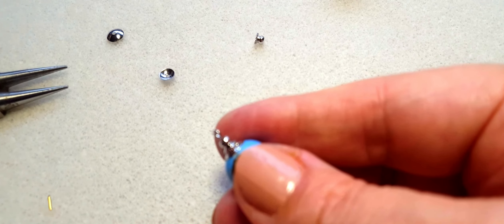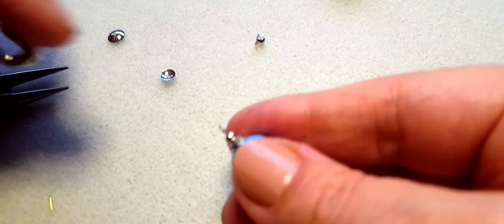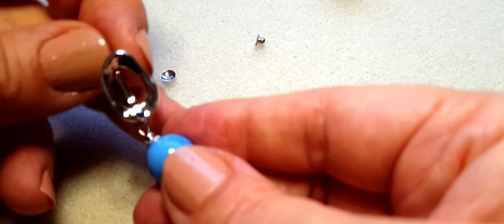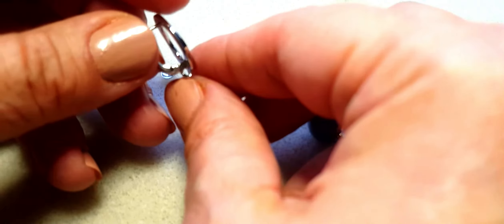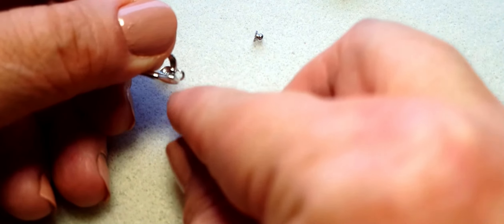Ear locks will usually have a loop in the bottom or on the back of the ear lock. And we can use this loop to attach our earring part.